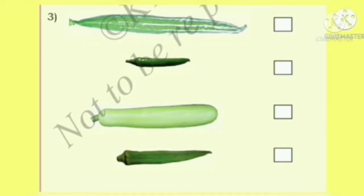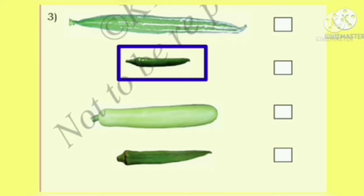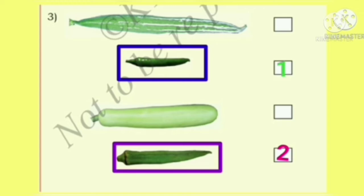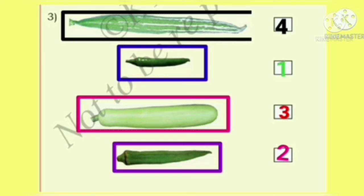Observe these vegetables. We have snake gourd, chili, bottle gourd, and lady's finger. Which is shortest? Chili is shortest, so let us write one for chili. Let us give number two to lady's finger, number three to bottle gourd, and number four to snake gourd.